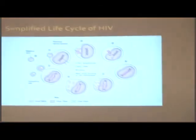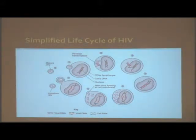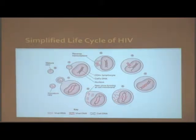This is the simplified life cycle of HIV. For the first step, the HIV virus attaches itself and penetrates its target cell. Then the HIV releases RNA, which is the genetic code of the virus, into the cell.